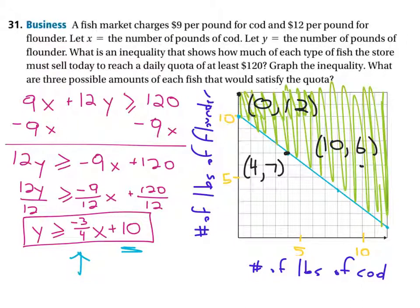Okay, so if you bought, if you sold 0 cod, but 12 flounder, you would exceed your quota. So any set of coordinates that are in the shaded region or on the line will satisfy the quota, and the first coordinate would be, the x coordinate would be the number of cod, because that's what it says up here. Let x be the number of cod, and then the y coordinate would be the number of pounds of flounder, because that's what it says there. So there's your answer. Hopefully that makes sense.